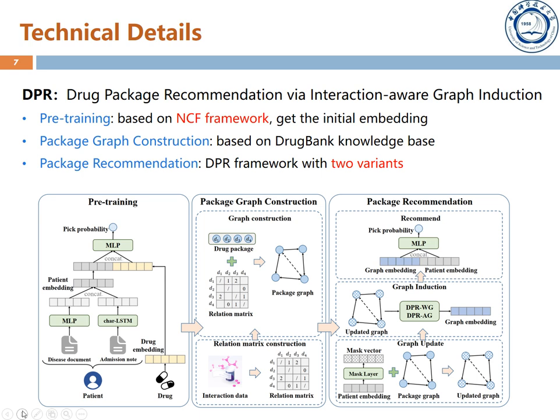Now we will introduce the framework of our model in detail. Our framework mainly consists of three components: pre-training, package graph construction, and drug package recommendation. Specifically, we first design a pre-training method based on neural collaborative filtering to get the initial embedding of patients and drugs. Then we propose to construct drug package graphs based on medical records and domain knowledge. Finally, a novel drug package recommendation framework with two variants is proposed to solve the drug package recommendation problem.